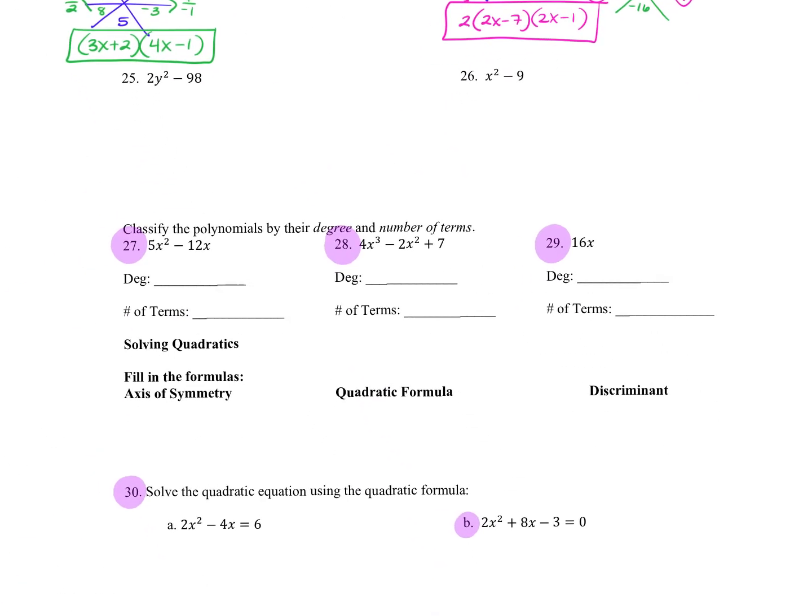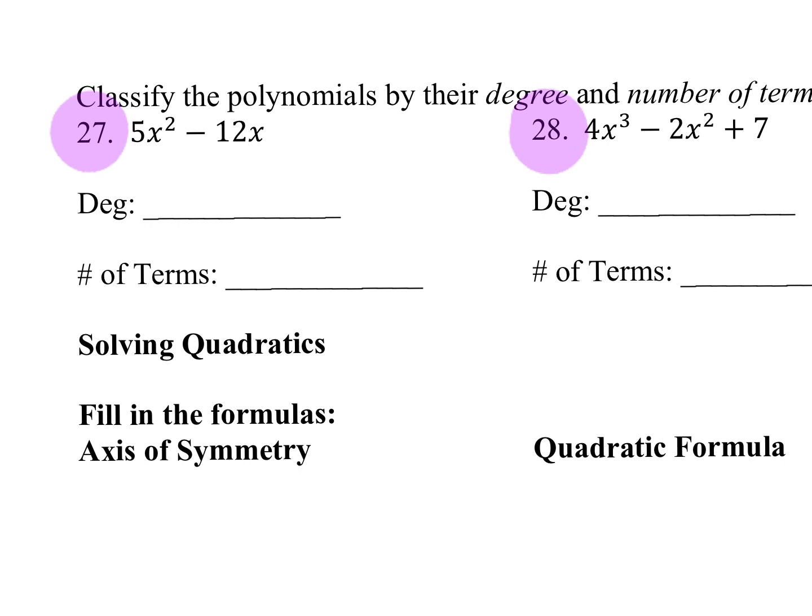Classifying by degree and number of terms. So what is the degree of 27? It's a quadratic. That's the name. What degree number? 2. It's a degree of 2. So it's whatever is your highest exponent. So that is called a quadratic. And then how many terms are there? Which is called a binomial. That's a quadratic binomial.